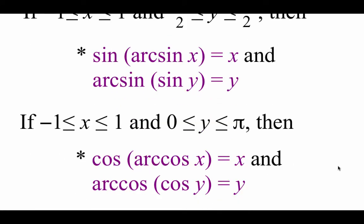Things change just a little bit when we're looking at cosines. We're still going to look at x values between negative 1 and positive 1, but this time we want our y values to be between 0 and π. Then if we did a cosine composed with an arc cosine of x, we're going to get back just that x value. And likewise, with that arc cosine composed with the cosine of y, we'll get back that y value.